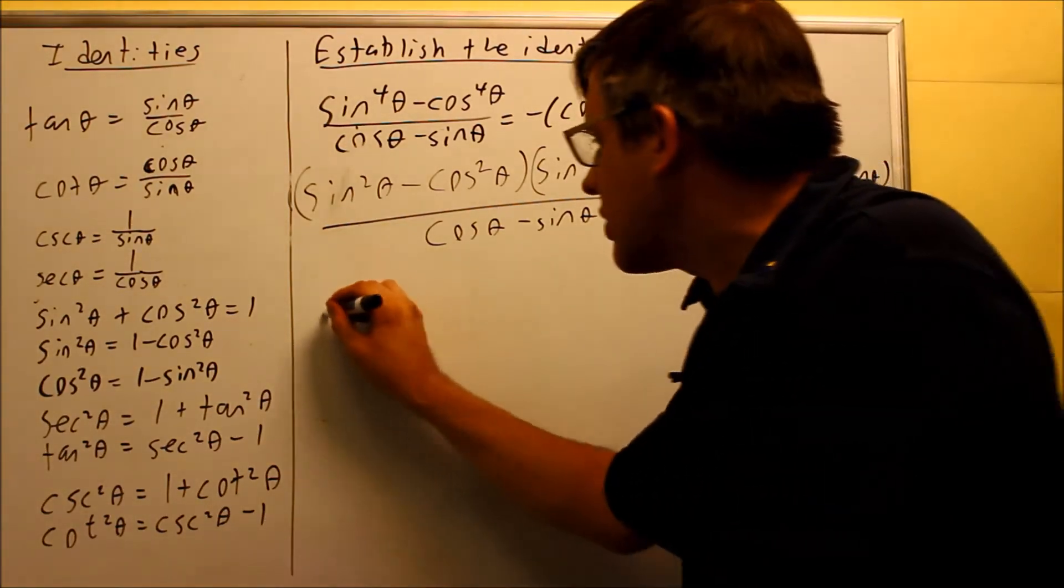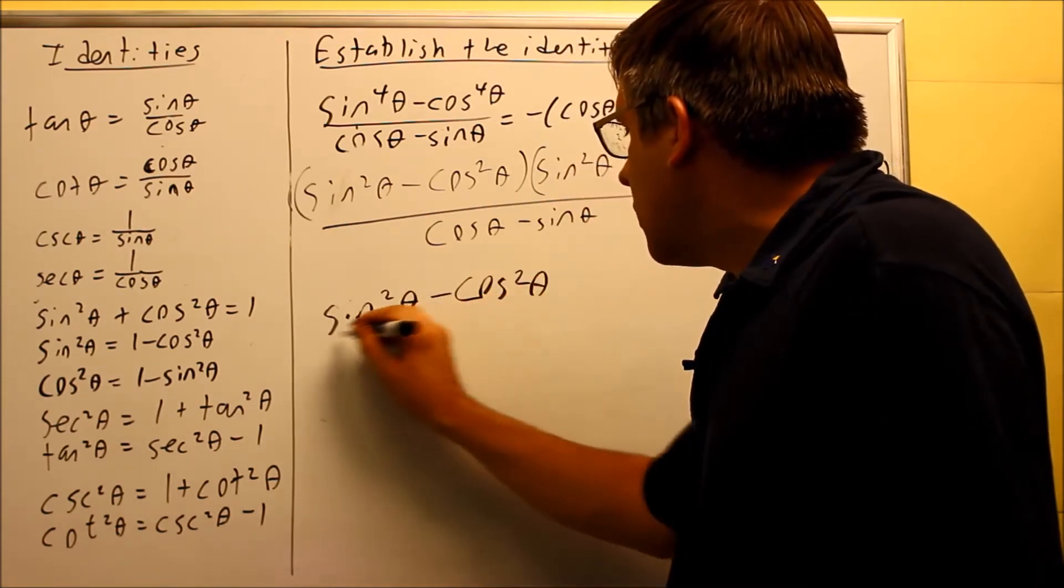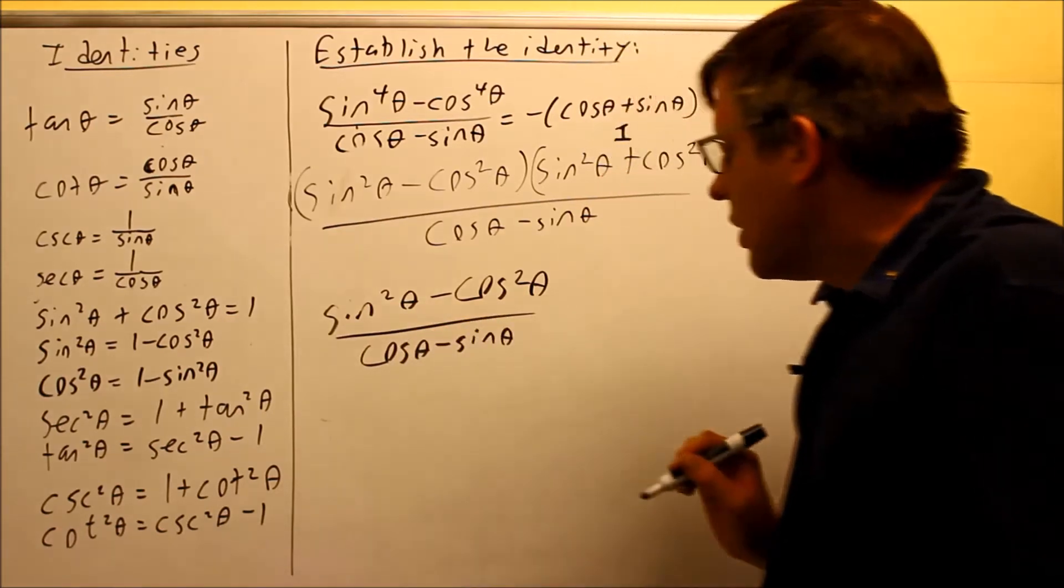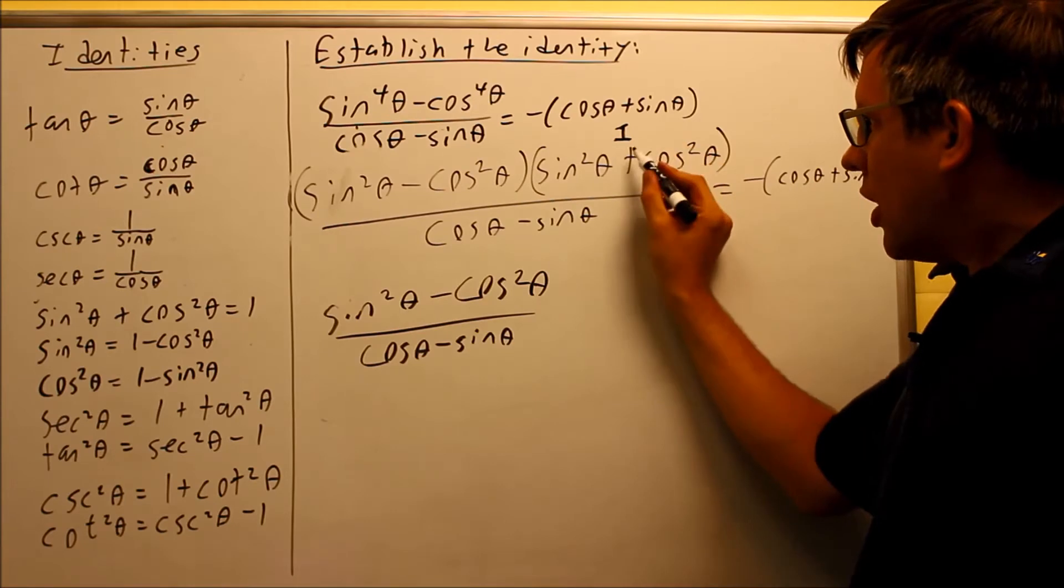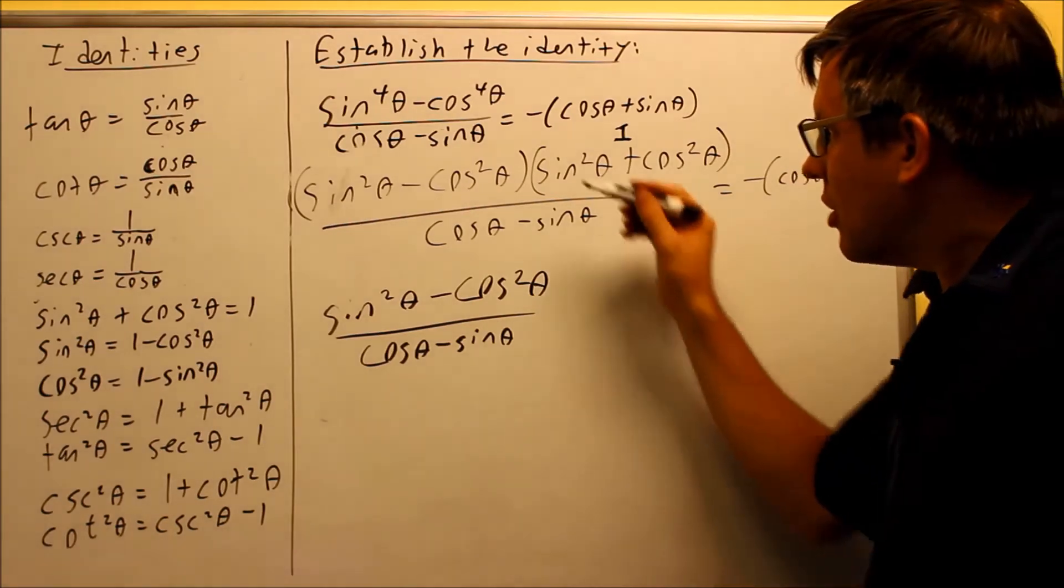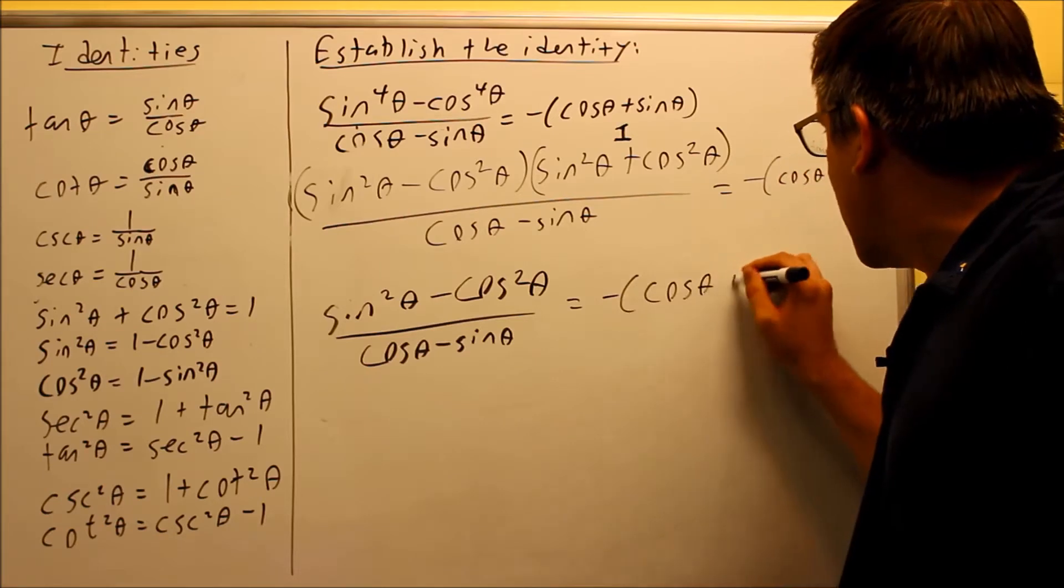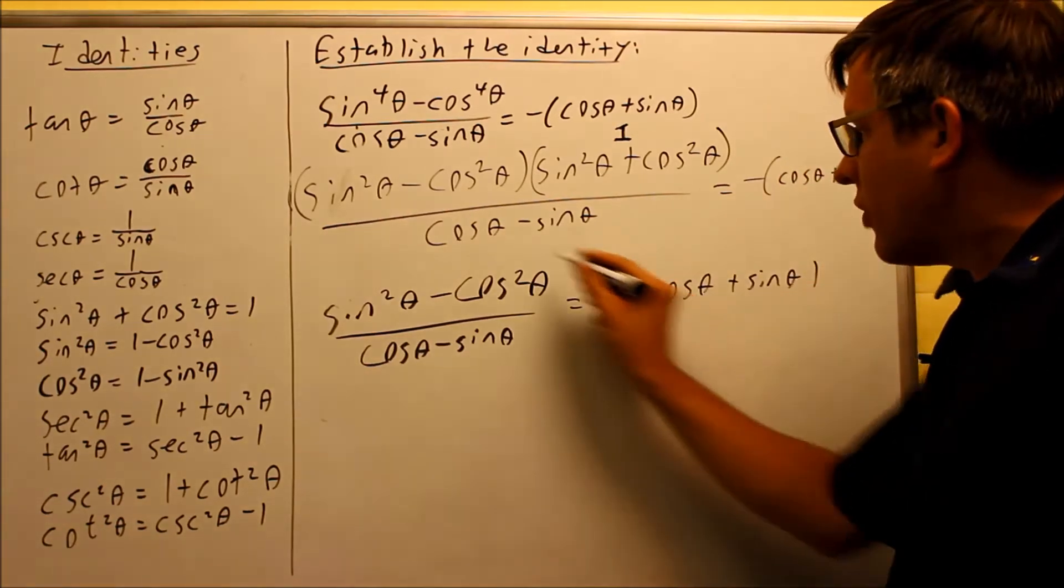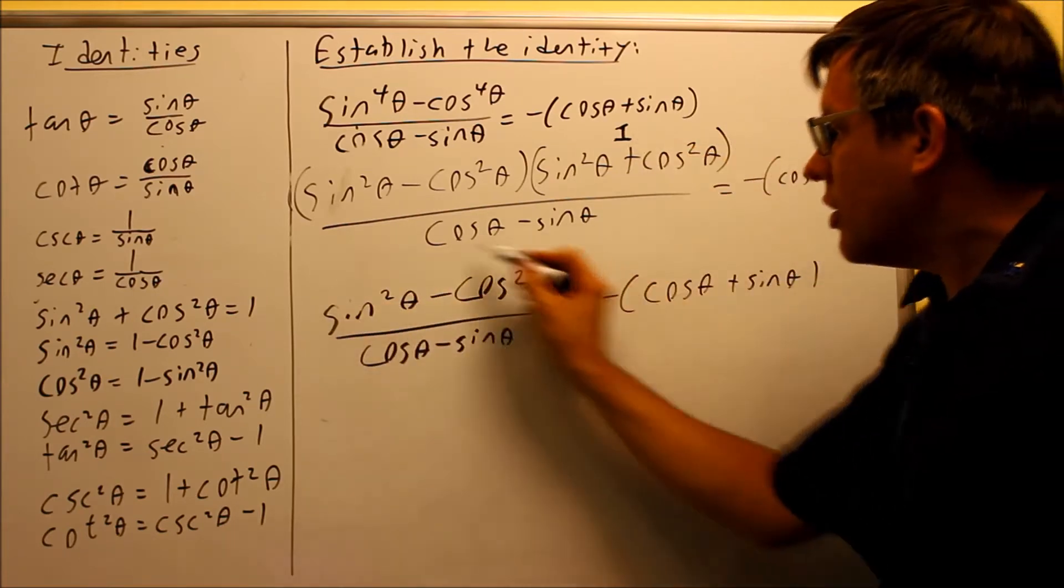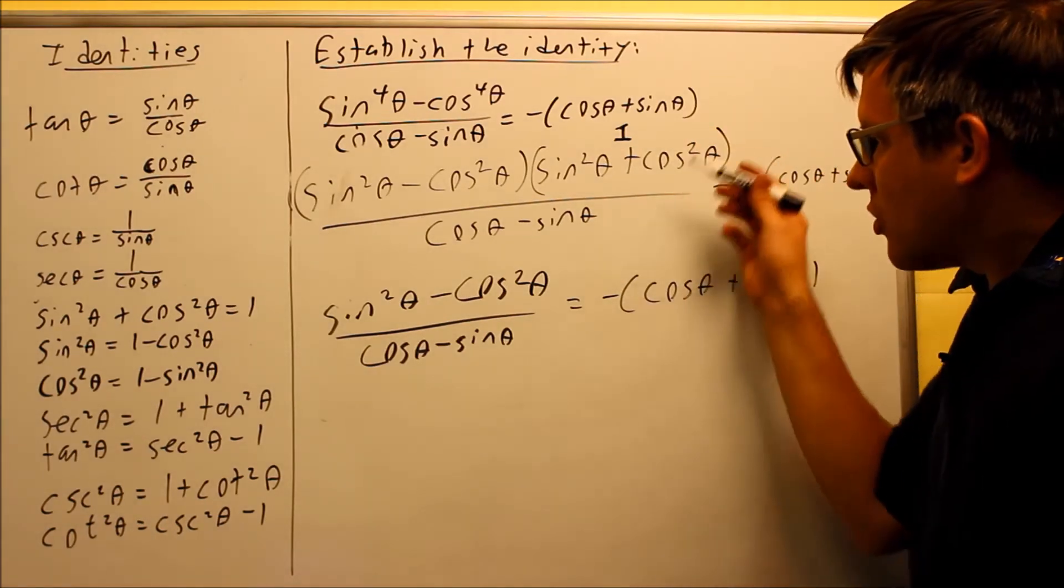So when I come down to the next step, it would look like this: sine squared minus cosine squared, and on the bottom I have cosine theta minus sine theta. The reason why this is gone is because I really have all this as being multiplied by one, so one times anything is itself. That's why in this step, I still have the right hand side, but I don't have this whole thing anymore. All this multiplied by one is itself.